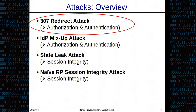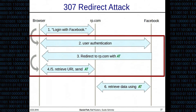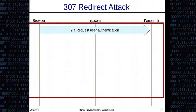As already mentioned, we tried to prove these properties but found severe attacks on OAuth and OpenID Connect. These include: the 307 redirect attack, the IDP mixup attack — both targeting authorization and authentication — and the state leak attack and the NARIF RP session integrity attack, both targeting session integrity. Let's look at the 307 redirect attack. Here's the implicit flow we've seen before, and we'll zoom in on what happens in steps two, three, and four.